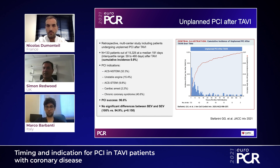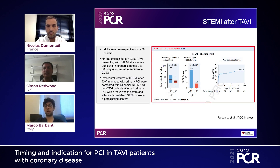Thank you, Marco. Just one quick question: in the STEMI patients you mentioned, the fourfold higher failure rate — was that due to coronary access issues in patients with prior TAVI? Yes, it was mainly in terms of re-access. There were very few patients where access was obtained but stent implantation failed; most failures were due to issues with coronary access itself.